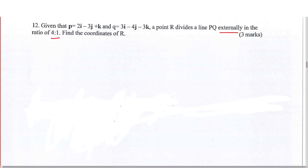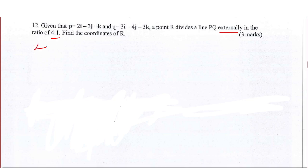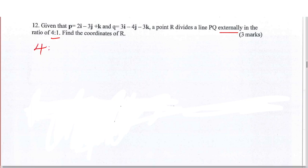Find the coordinates of R. The first thing: when you're given external division and a ratio is given, and this ratio is not negative — there's nowhere you can see it is negative — this implies that since R is dividing the line externally, the ratio you're going to use for working will be 4 to negative 1.